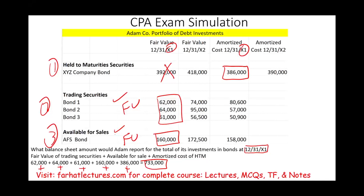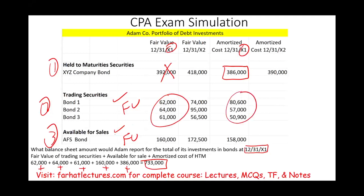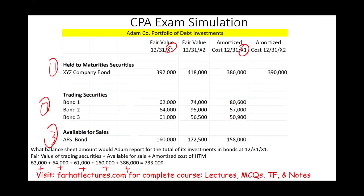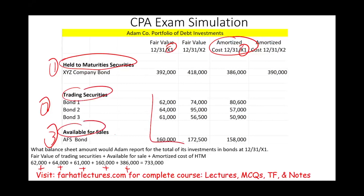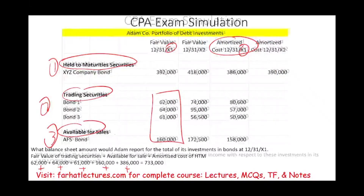You have to be very careful about common mistakes a student can make. Rather than using X1, some students will use X2 figures, which is incorrect. Another mistake: rather than using fair value for trading securities, some students might use cost, or they might incorrectly use fair value for held-to-maturity. You have to be careful that held-to-maturity are reported at amortized cost, while trading securities and available-for-sale are reported at fair value.